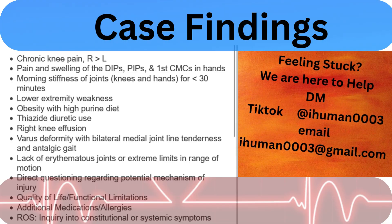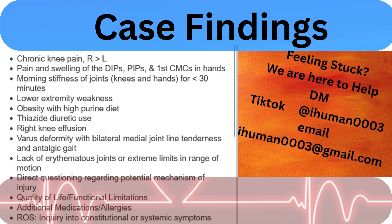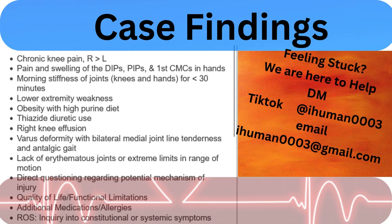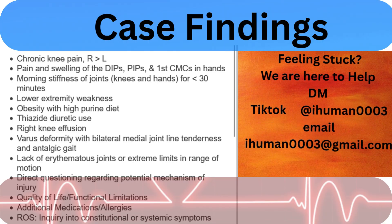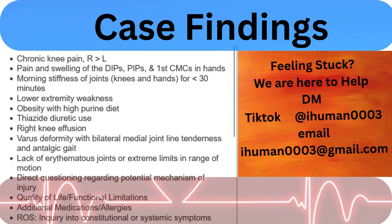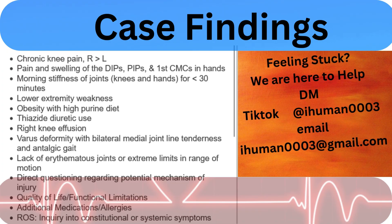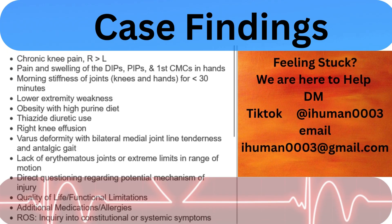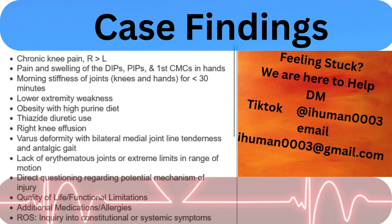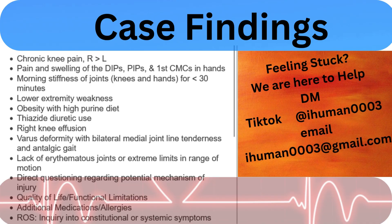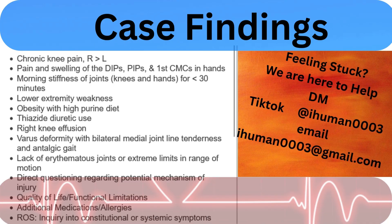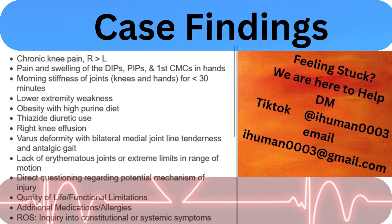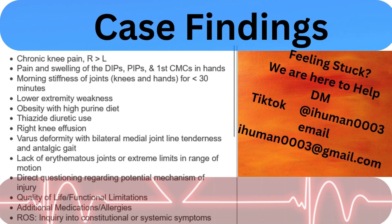Based on all the evidence, the correct diagnosis is osteoarthritis. Why not rheumatoid or septic arthritis? RA would have morning stiffness lasting over an hour and typically involves the small joints, not the DIPs. Septic arthritis would present with a severely hot, red, swollen, erythematous joint and likely a fever, which our patient denies.